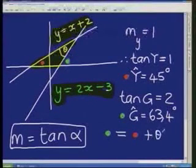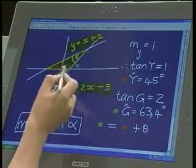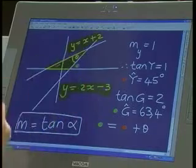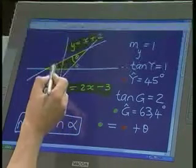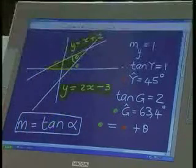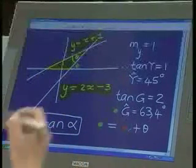So from basic grade 8 geometry, the exterior angle of a triangle is equal to the sum of the two interior angles. So the green angle is equal to the red angle plus theta.